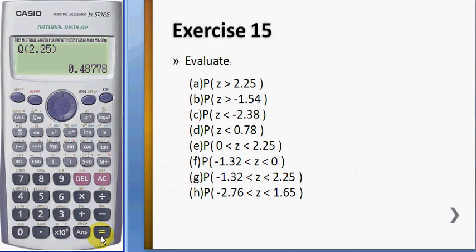And for f, you also use Q. Shift 1, 7, number 2, enter 1.32, and this gives 0.40658. Please note that if you remove the negative sign, you get the same answer.